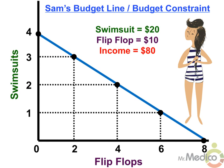Each point along the budget line represents a combination of goods that she can afford with her $80 budget. She cannot afford any of the combinations that lie outside of her budget line. However, Sam can afford any combination of these goods that fall inside her budget line. To maximize her satisfaction, or what economists call utility, she would want to find the right combination of these two goods on the budget line. To find the optimal combo, we would need to know Sam's marginal utility of consuming swimsuits and flip-flops. We would then find where the ratios of marginal utility to price are equal for both goods.